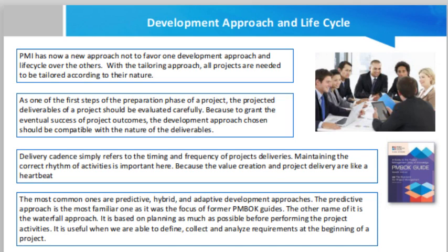PMBOK 7 defines the domain in terms of three desired outcomes that demonstrate the project team has executed it effectively: first, development approaches that are consistent with project deliverables; second, a project lifecycle consisting of phases that connect the delivery of business and stakeholder value from the beginning to the end of the project; and third, a project lifecycle consisting of phases that facilitate the delivery cadence and development approach required to produce the project deliverables.